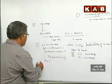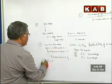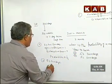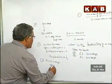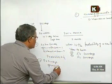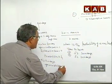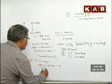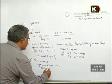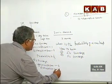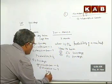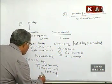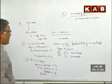For part B — exactly 52 Sundays — the favorable cases become six (you do not want the extra day to be Sunday, so any of the other six days are favorable), and the exhaustive cases remain seven. So the probability is six by seven.